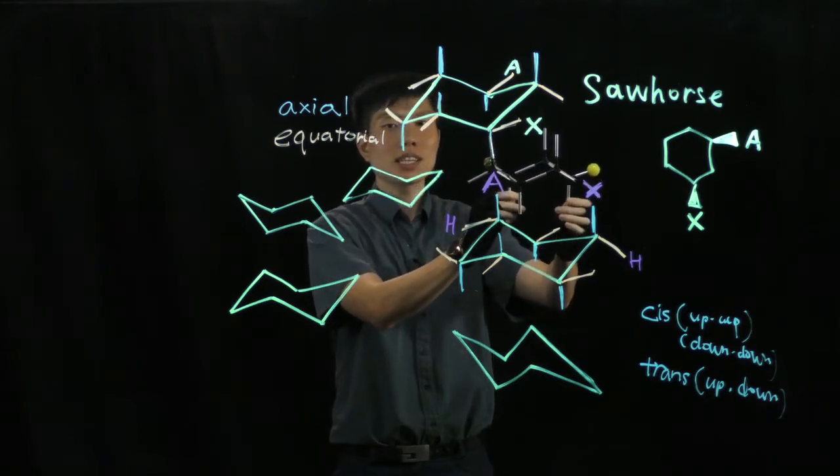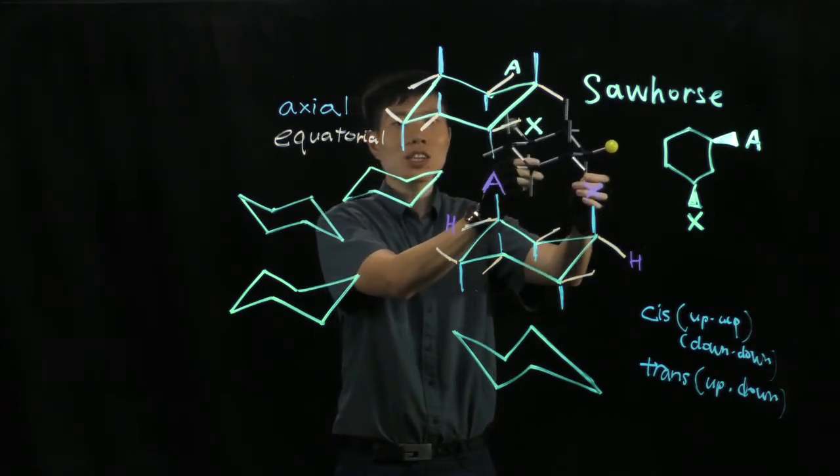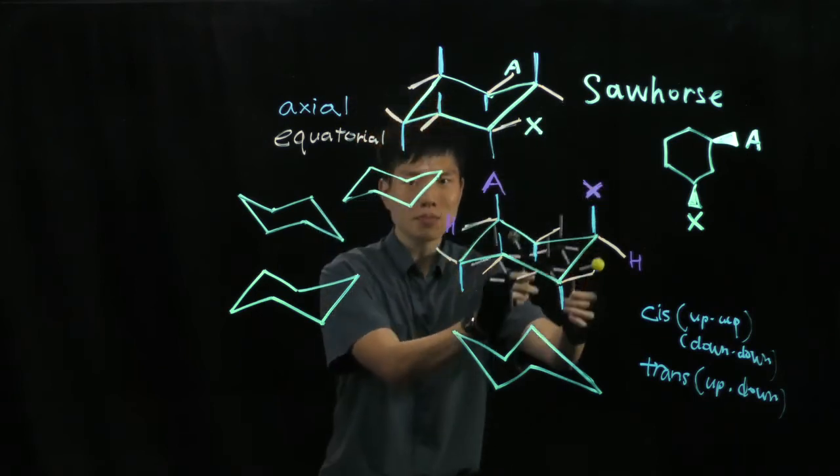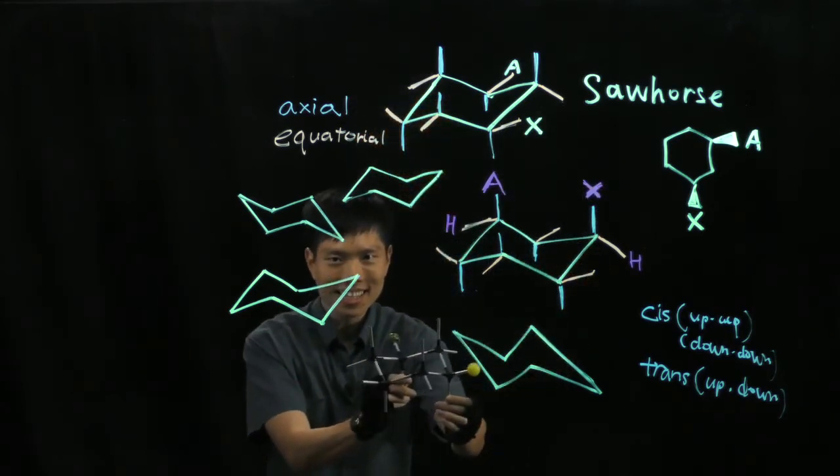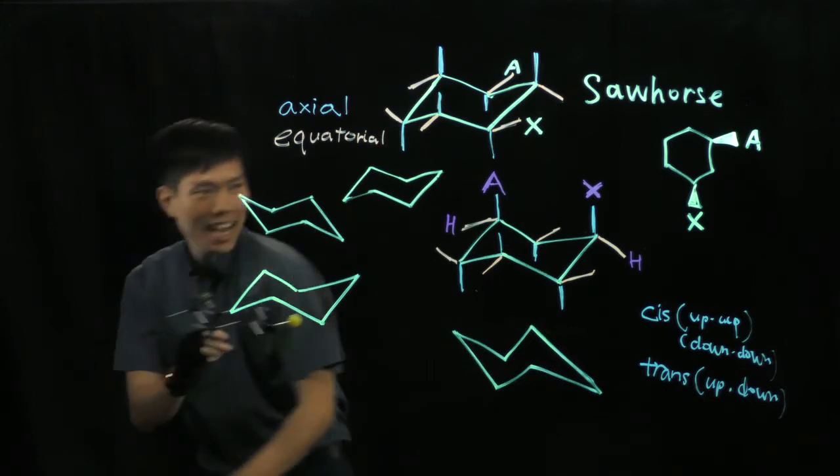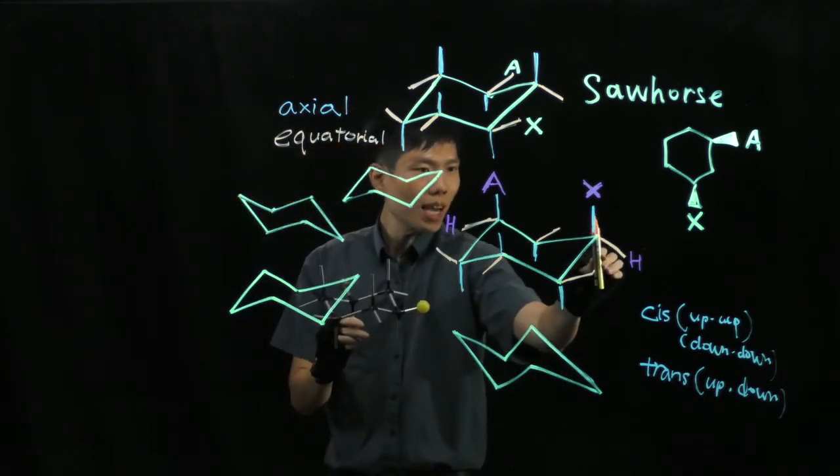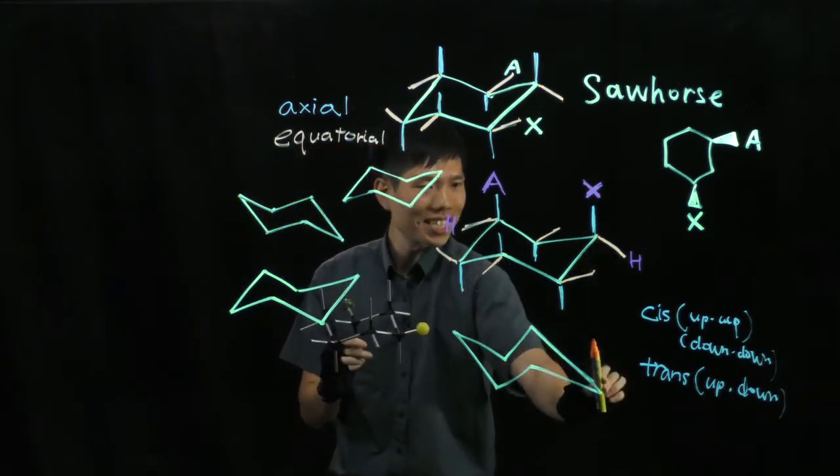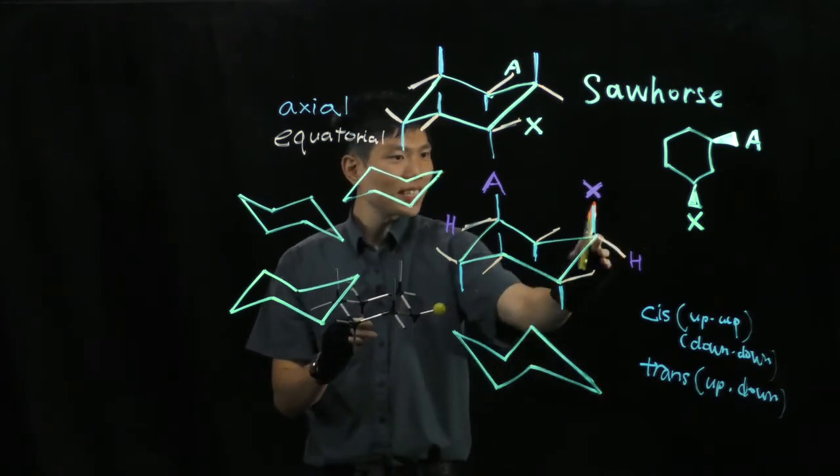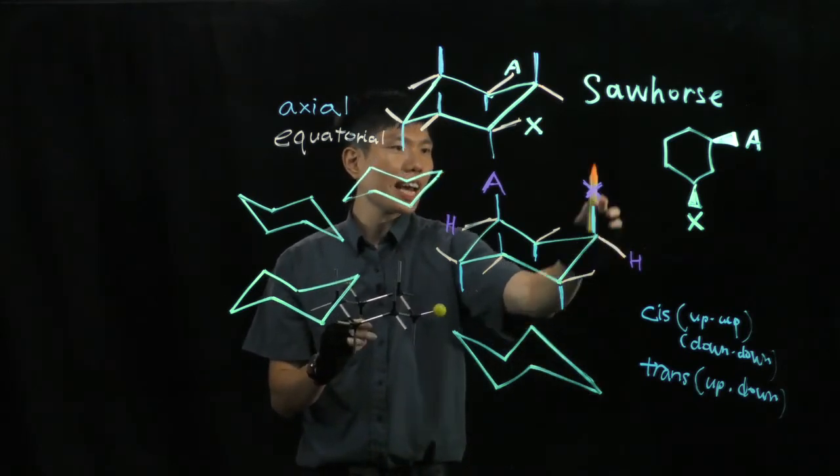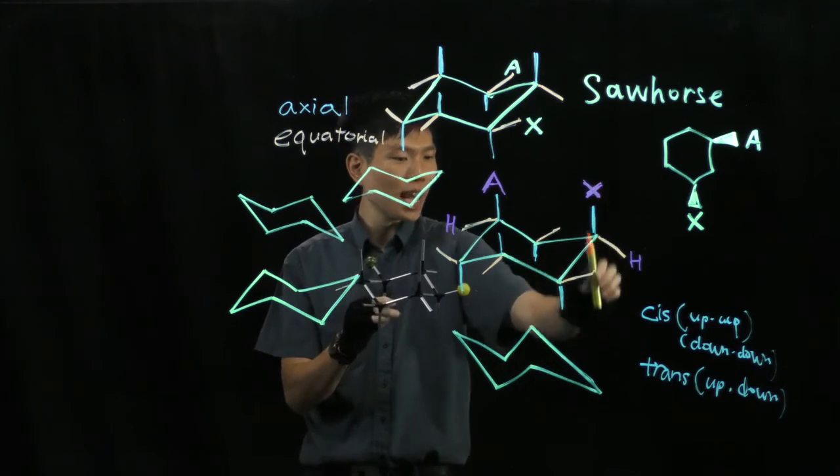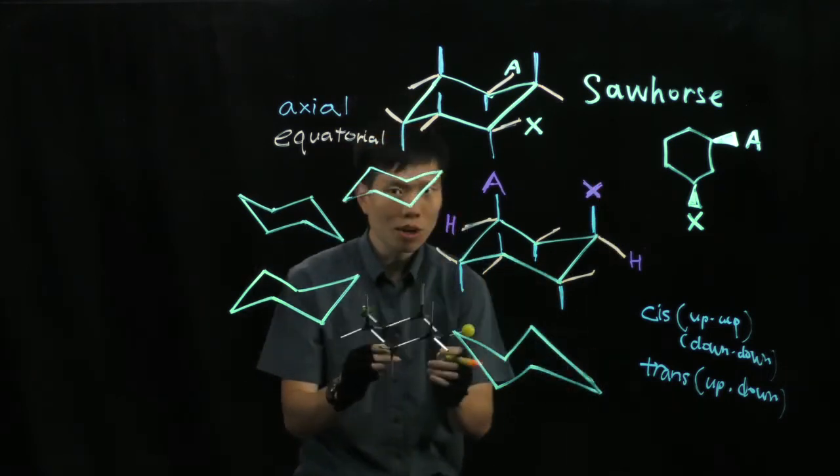What happens is the orientation goes the other way, which is similar to this case. What doesn't change is that the rightmost carbon here remains the same as X. In fact, this carbon was originally having an X in the axial position, so now it must be in the equatorial position.